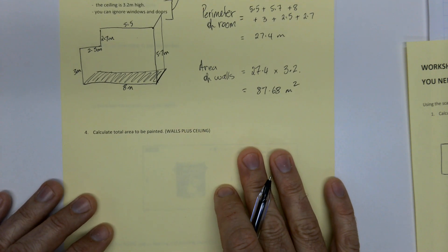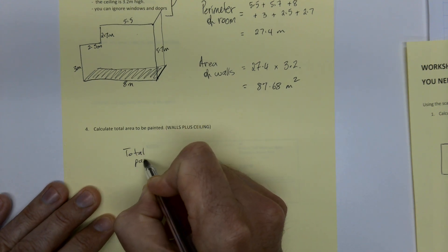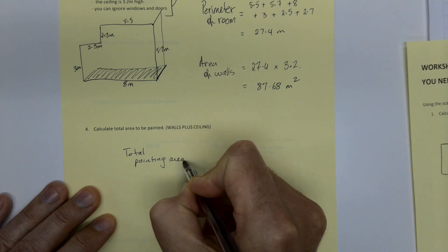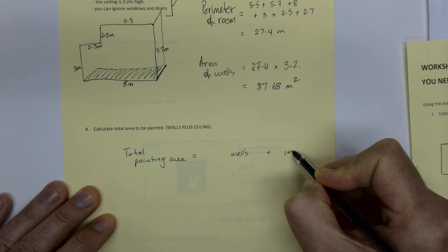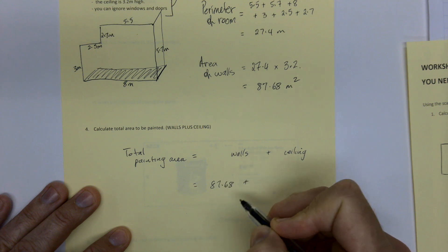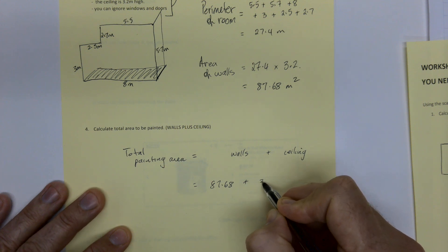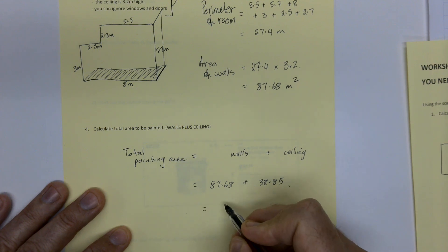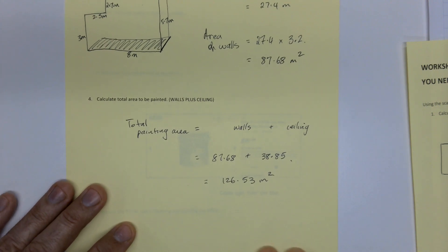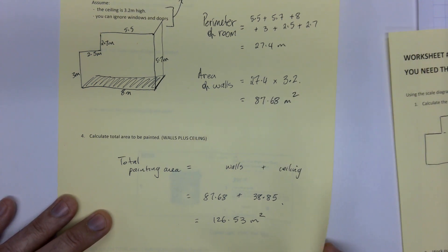Now the area of the ceiling is basically the area of the floor. So the total painting area is the walls plus the ceiling. So we know that the walls are 87.68 meters. We worked out before that the floor area was 38.85. So that's the same as the ceiling. And then ends up being 126.53 square meters. So the total area to be painted is that. So it's the ceiling plus the walls. And the ceiling is the same as the floor.